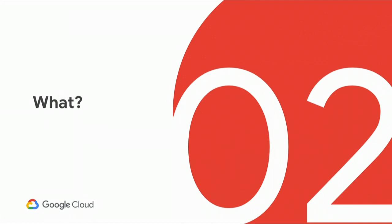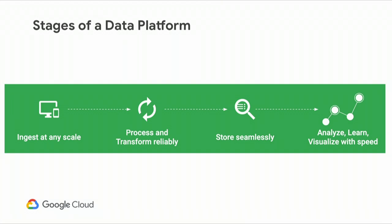On Google Cloud Platform we focus on four stages of a data platform. The first is the ability to ingest at any scale — we're going to show you not just that we can do streaming, but that we can do it at scale, ingesting thousands and millions of messages. The second is to process and transform the data reliably. The third is to store seamlessly. The fourth is to analyze, learn, and visualize with speed.